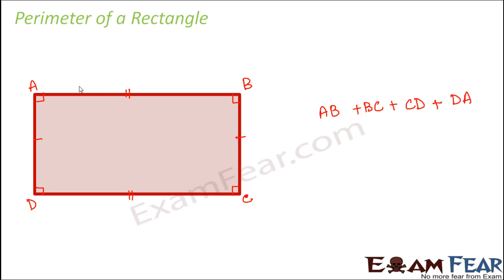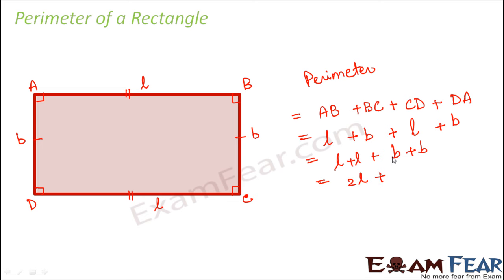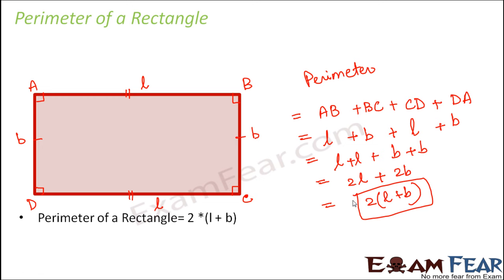Let us say the length of side AB is L. Then CD would also be L, because opposite sides of a rectangle are equal. Let the length of AD be B, denoting the breadth, so BC would also be B. The perimeter becomes L plus B plus L plus B, which is 2L plus 2B, or 2 multiplied by the quantity length plus breadth. This formula gives us the perimeter of a rectangle — all we need is its length and breadth.